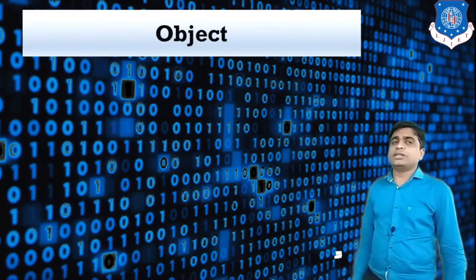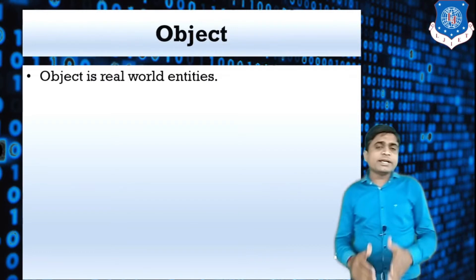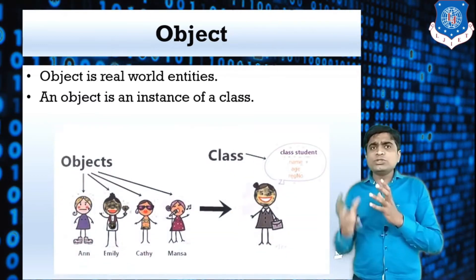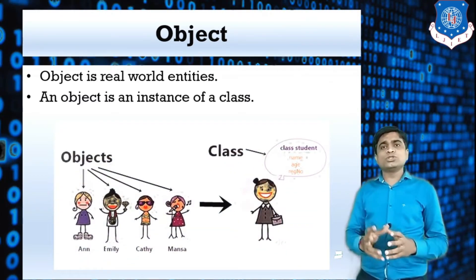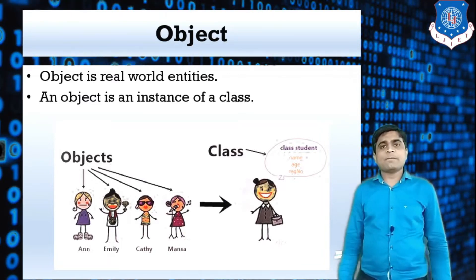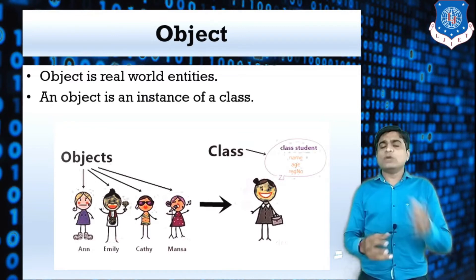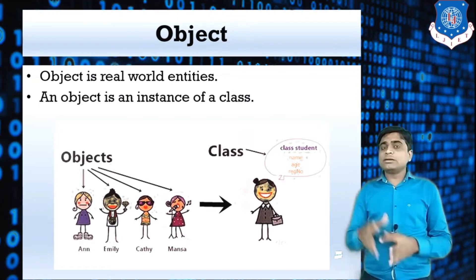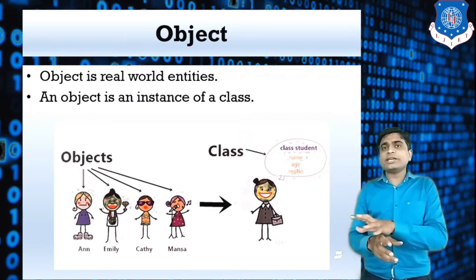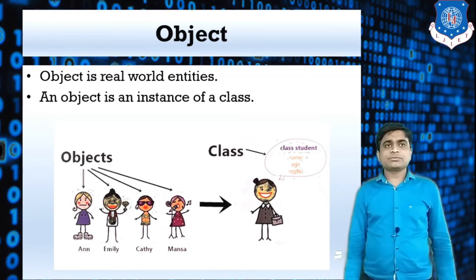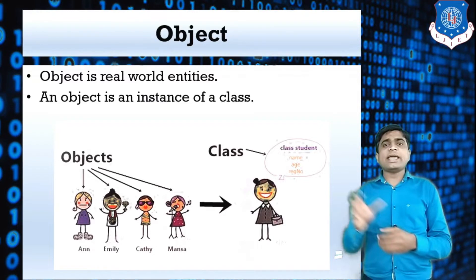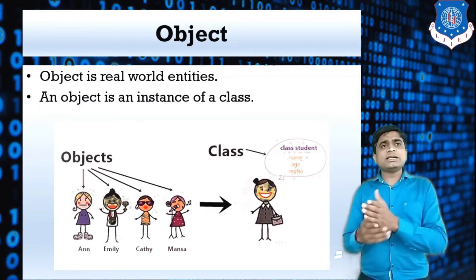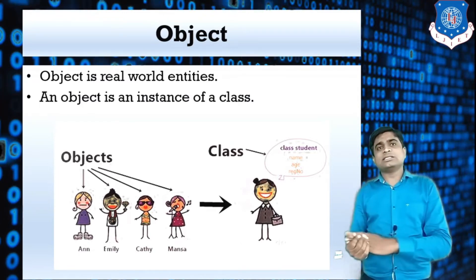What is an object? An object is a real-world entity. Basically, an object is used to access the property of the class. The object's role is the most important — using the object you can access the data and methods of the class. An object is nothing but an instance of the class.